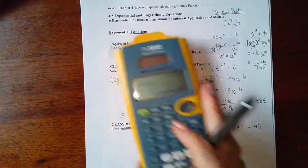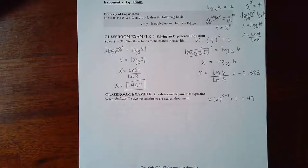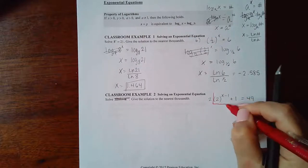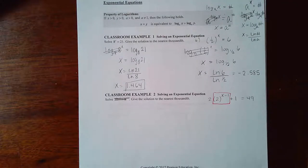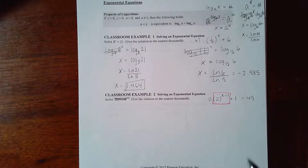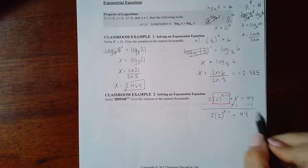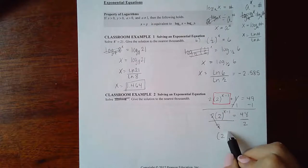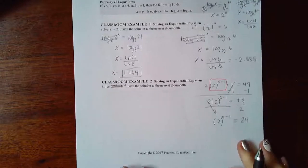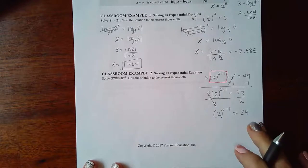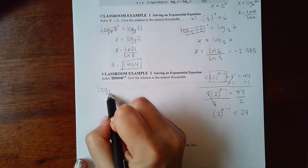Notice that in both of those problems the exponential piece was alone before I started introducing log on both sides. In this next example, the exponential piece is not alone — it has a coefficient of 2 and there is a plus one — so we have to isolate that exponential part before introducing the log. The first thing we do is subtract one from both sides, giving 48, then divide by the coefficient 2, so we get 2 to the power (x minus 1) equals 24. Now that the exponential part is by itself, I can apply log base 2 on both sides.